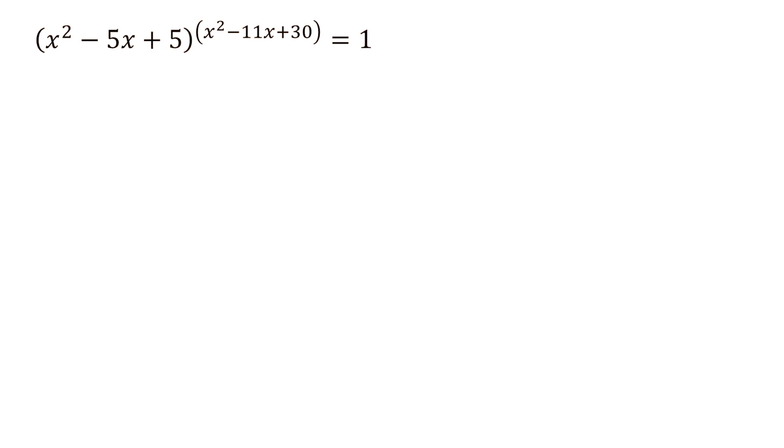Let's begin to solve the question. The question is x² - 5x + 5 to the power x² - 11x + 30 equals 1. How can we solve this? This is the base, so we denote this by b, and this is the exponent, we denote this by e.